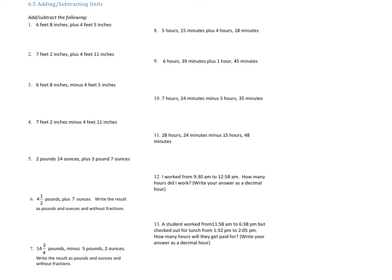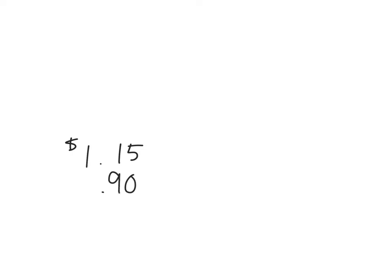Adding and subtracting units is very similar to what we do with money. For example, if you had one dollar and 15 cents and added 90 cents, you add straight across because everything is base 100. It works similarly here, except instead of 100, there may be 16 ounces in a pound, 12 inches in a foot, or 60 minutes in an hour.